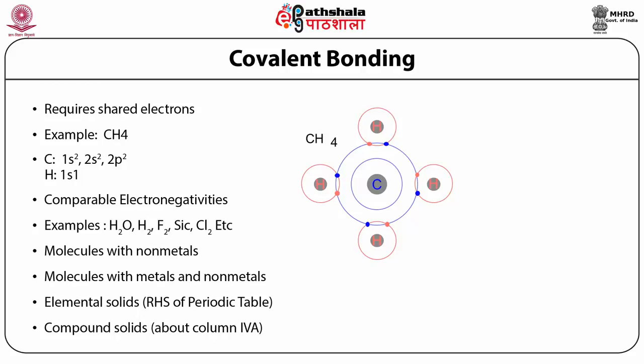This leads to an inter-bond angle of 109.5 degrees and strong directionality in diamonds. Examples include silicon (176 kJ per mole) and diamond (347 kJ per mole).